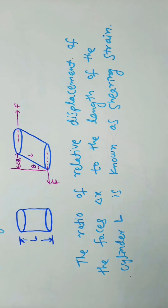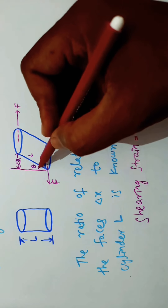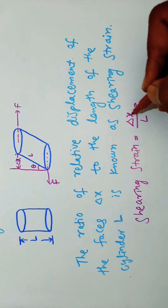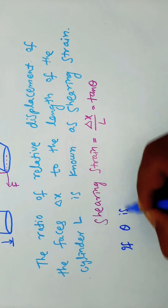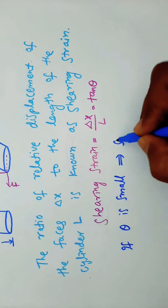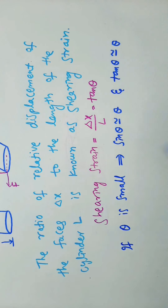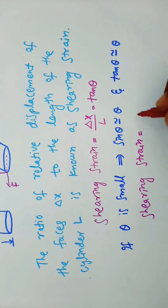Shearing strain is Δx by L. Here, tan theta equals the opposite side by hypotenuse, that is Δx by L. So we can write Δx/L = tan theta. If theta is small, sin theta ≈ theta and tan theta ≈ theta. Therefore, shearing strain = Δx/L = theta.